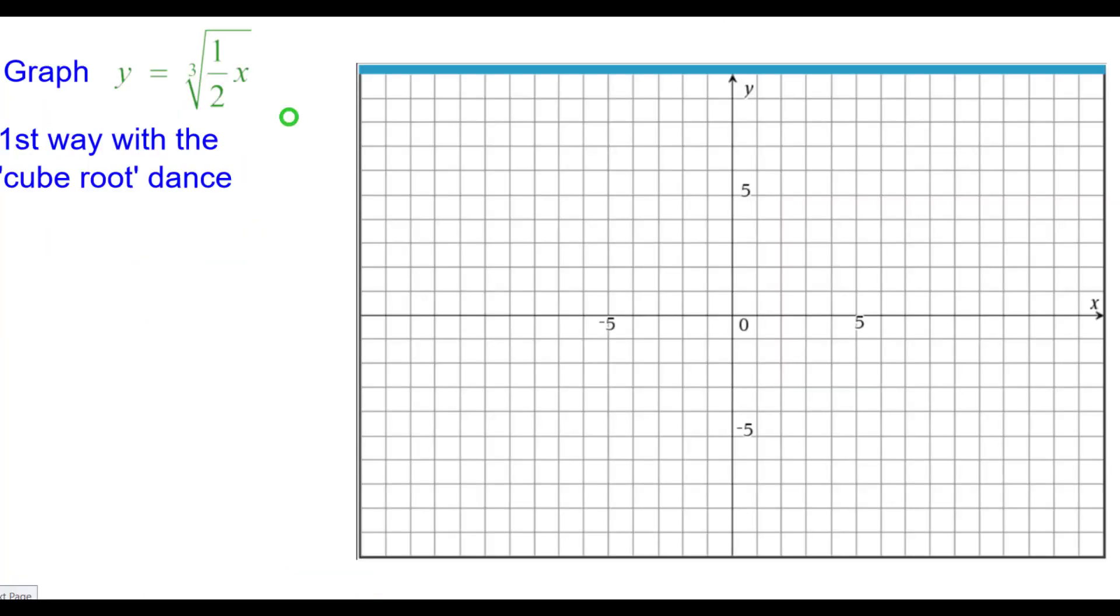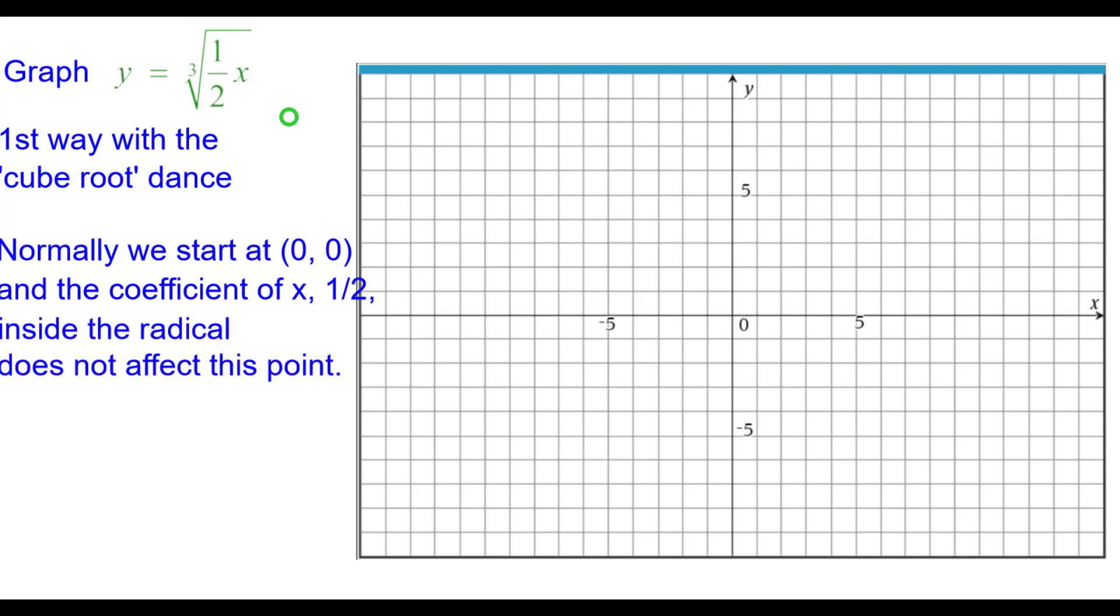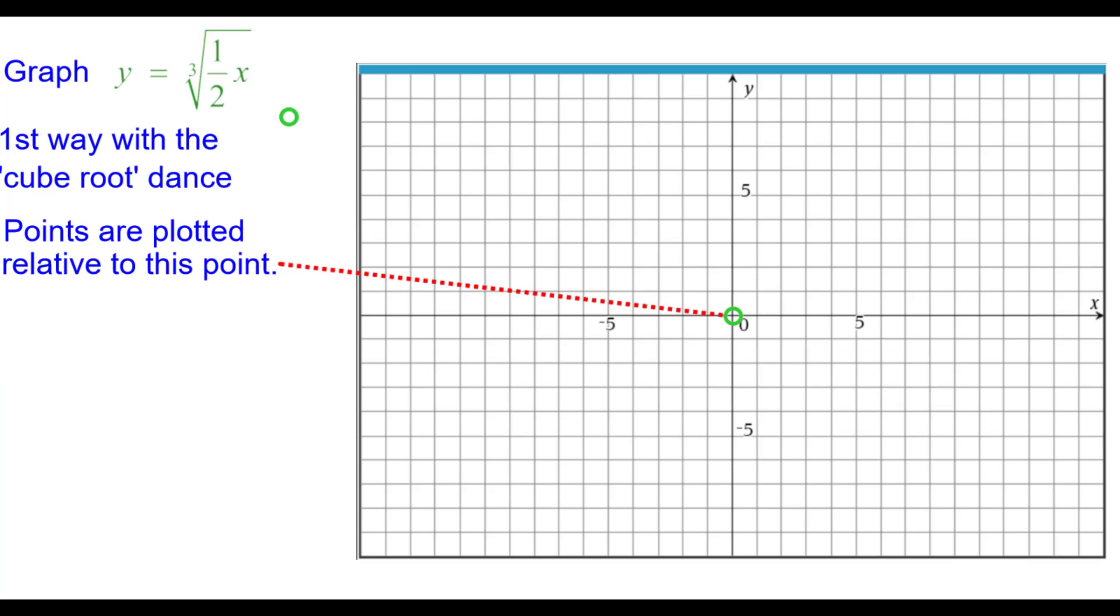The first way is with what we call the cube root dance. Normally we start at the origin and with the coefficient of x being one half inside the radical. This does not affect the point because when x is zero, y is also equal to zero and points are going to be plotted relative to the origin.